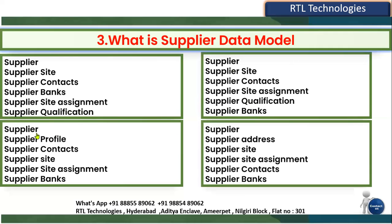Option B: Supplier → Supplier Site → Contact → Site Assignment → Qualification and Banks. Option C: Supplier → Supplier Profile → Contact → Site → Site Assignment and Banks. Option D: Supplier → Supplier Address → Supplier Site → Supplier Site Assignment → Supplier Contacts → Supplier Banks. When creating a supplier, we first define the supplier, then the supplier address. Without an address we cannot create a supplier site — address is mandatory. Since none of the other options include address at the right level, the last option is correct.